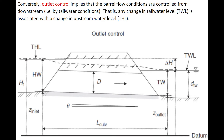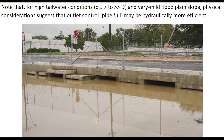Conversely, outlet control implies that the barrel flow conditions are controlled from downstream by the tailwater condition. Any change in tailwater level is associated with a change in the upstream water level. Note that for high tailwater conditions and a very mild flat-plane slope, physical considerations suggest that outlet control pipe flow may be hydraulically more efficient.